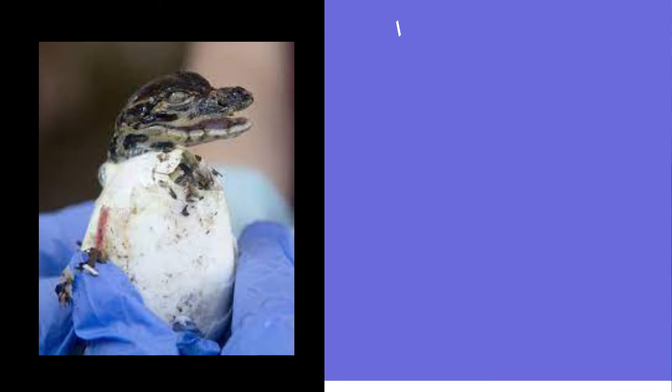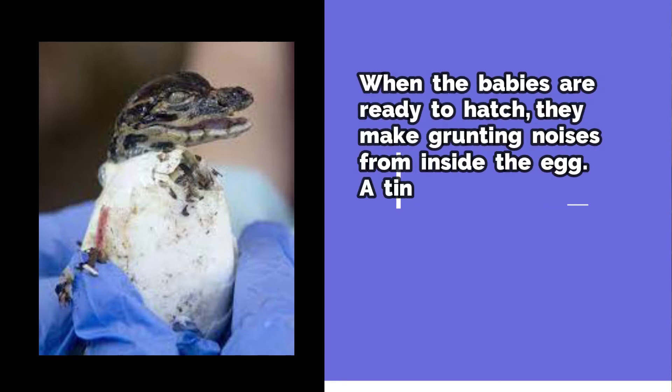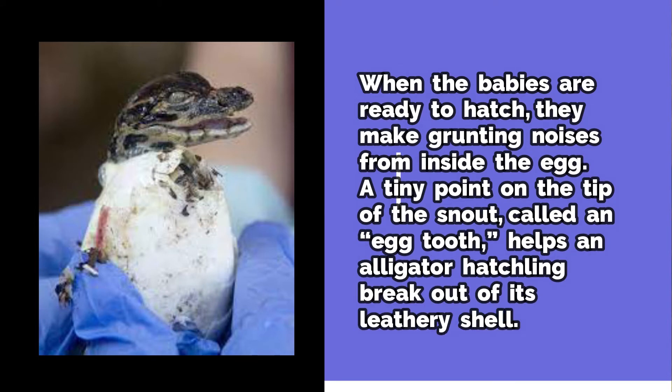Look at the cute baby alligator — it looks like a little dinosaur! When the babies are ready to hatch, they make a grunting noise from inside the egg. A tiny point on the tip of their snout called an egg tooth helps alligator hatchlings break out of their leathery shell. Can you find the egg tooth? If you need help, just search for the arrow.